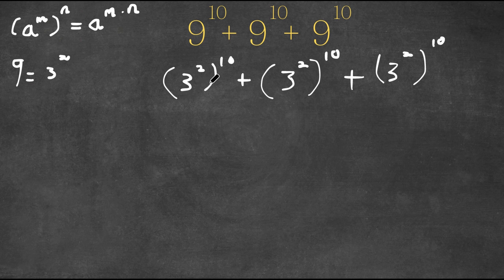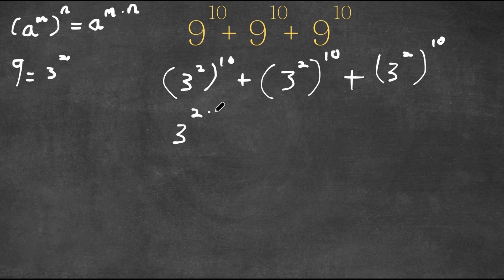And now, as you can see, all three of our terms are in the form a to the power of m to the power of n. And remember, that is equal to a to the power of m times n. So this would equal 3 to the power of 2 times 10, and the same goes for the other two.